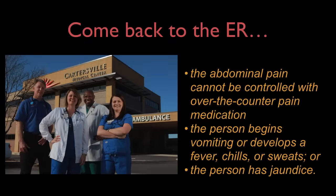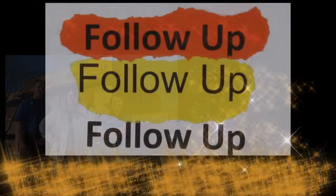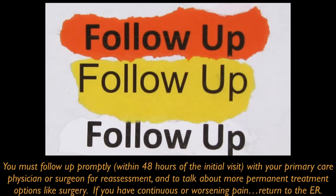When to come back to the ER: if the abdominal pain cannot be controlled with over-the-counter pain medications, if the person begins to vomit or develops fever, chills, sweats, or if the person becomes jaundiced. You must follow up promptly within 48 hours of the initial visit with your primary care physician or surgeon for reassessment and to discuss more permanent treatment options like surgery. If you have continuous or worsening pain, return to the ER right away.